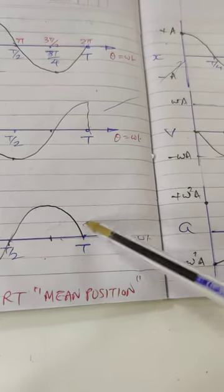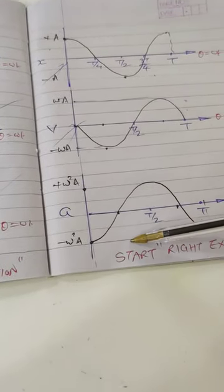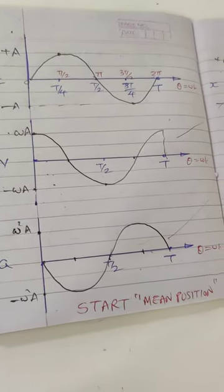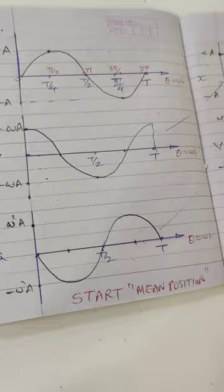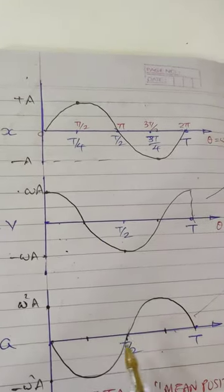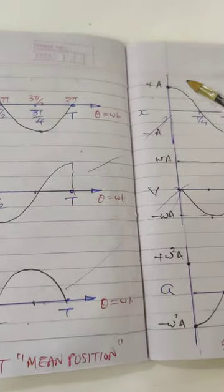I'll explain everything properly. In the examination, if the question asks to draw the graph, leave the space on the page first and then draw the graph. For mean position: draw displacement, then velocity, then acceleration. This becomes graph number one, this becomes number two.